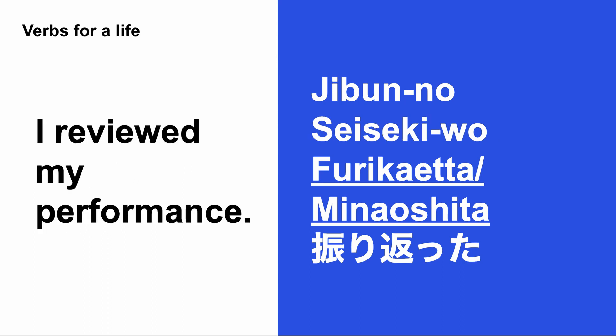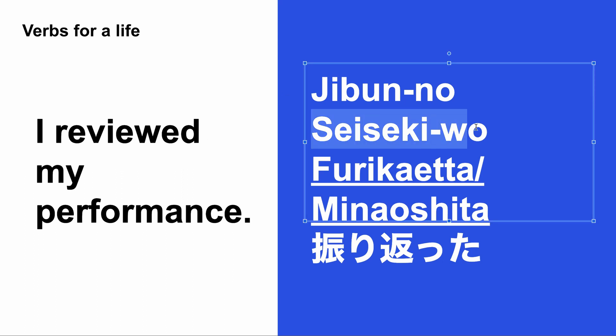The last verb: 振り返った again, but this time for performance. I reviewed my performance — 自分の成績を振り返った. 成績 means performance or grades. You can use 成績 for grades from school or university, and also for work performance. 自分の成績を振り返った or 自分の成績を見直した.